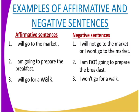To negate an affirmative sentence, we say: 'I will not go to the market' or 'I won't go to the market.' Another affirmative example: 'I'm going to prepare the breakfast.' Its negative form is: 'I'm not going to prepare the breakfast.' Affirmative sentences show positivity — yes — while negative sentences negate with no. Another example: 'I will go for a walk' is affirmative, and 'I won't go for a walk' is its negative form.